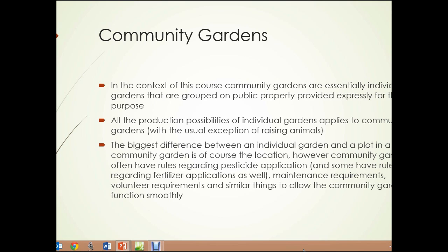Community gardens: in the context of this course, community gardens are essentially individual gardens that are grouped on public property, provided expressly for that purpose. All the production possibilities of individual gardens apply to community gardens, with the usual exception of raising animals — that's usually not something allowed in a community garden. The biggest difference between an individual garden and a plot in a community garden is, of course, just the location. However, community gardens often have rules regarding pesticide and fertilizer applications, maintenance requirements, volunteer requirements, and similar things to allow the community garden to function smoothly.